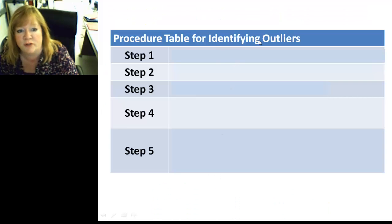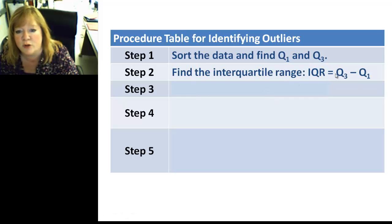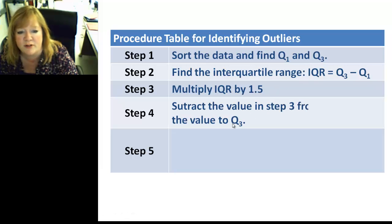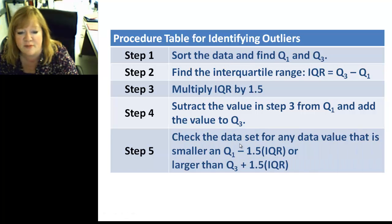All right. So, let's do the procedure for identifying outliers. Step 1, sort the data and find Q1 and Q3. Step 2, find the interquartile range. How do you do that? You subtract these two values, Q3 minus Q1. Step 3, multiply the IQR, this number that you found in step 2, by 1.5. Step 4, subtract the value in step 3 from Q1 and add it to Q3. Step 5, check the data set for any data value that is smaller than this guy or larger than this guy. So, these intervals that you found, step 4 is finding the interval that most of your data should be between. If it's not in that interval, you've got yourself an outlier.